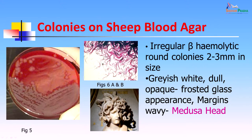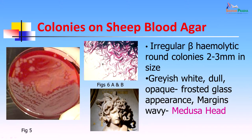The plate on the left-hand side shows the typical colonies of Bacillus anthracis. The margins of the colonies, if seen under the microscope, give a Medusa head appearance. Medusa is from Greek mythology — a gorgon or monster with snakes in her hair, and the edge of the colony looks just like that. When grown on a medium containing penicillin, the same organism gives a drastically different appearance: cells become large and spherical, appearing in chains on the surface of the agar. These colonies are smooth and have been likened to a string of pearls.